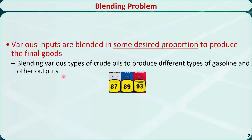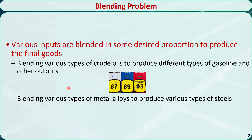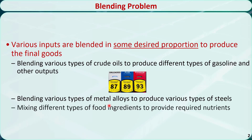For example, blending various types of crude oils to produce different types of gasoline and other outputs, blending various types of metal alloys to produce various types of steels, or mixing different types of food ingredients to produce required proportions of nutrients.